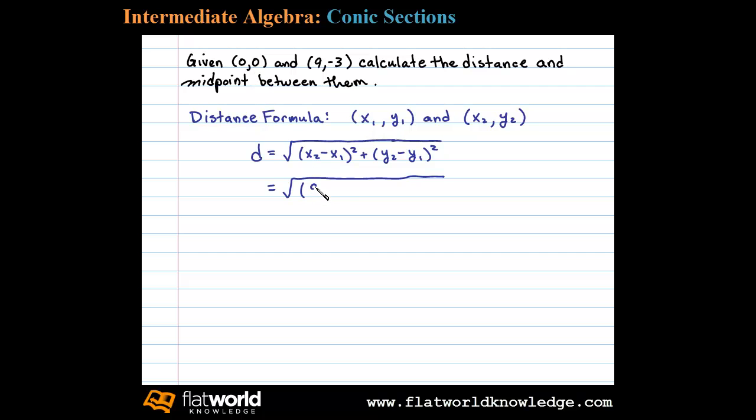Plus y₂ is -3 and y₁ is 0, so we have -3 minus 0 squared.